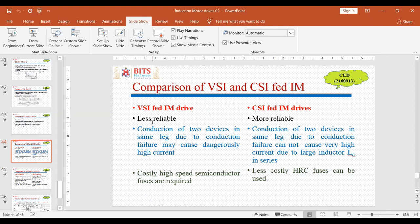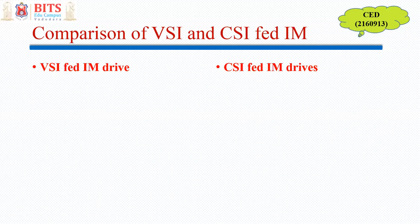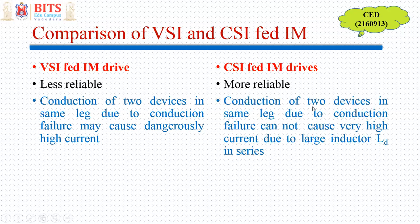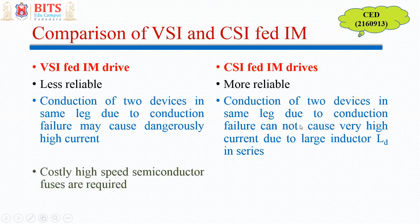VSI-fed induction motor drives are less reliable while CSI-fed are more reliable. Conduction of two devices in the same leg due to a conduction failure may cause dangerously high current in a voltage source inverter, while the same cannot happen in a CSI because the large inductor Ld will automatically come in series in case of a commutation failure, so the current will not be that large.